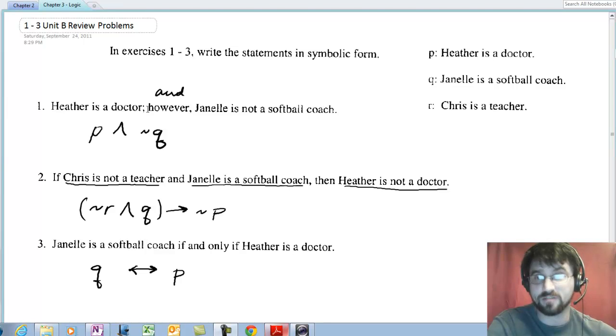It says Heather's a doctor, however Janelle is not a softball coach. Heather's a doctor is statement P, that's right up here. Janelle is a softball coach is Q. So we know we have P and we have not Q, and however is the equivalent of an and. So our symbol is P and not Q.